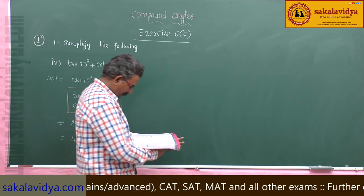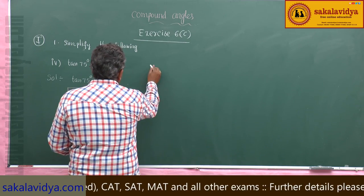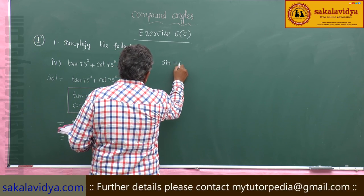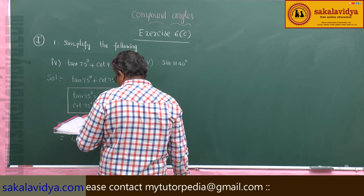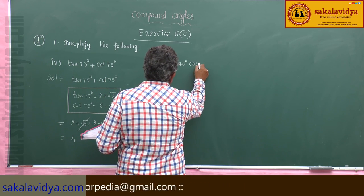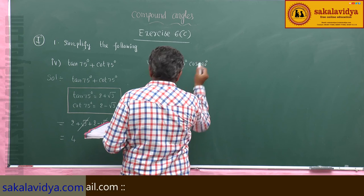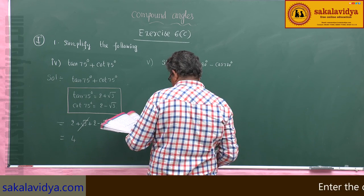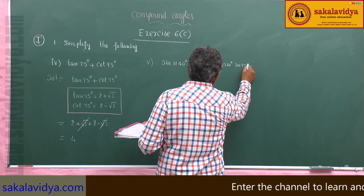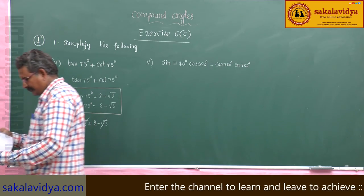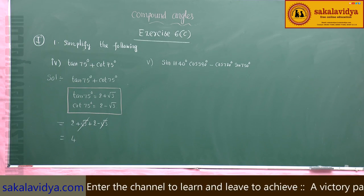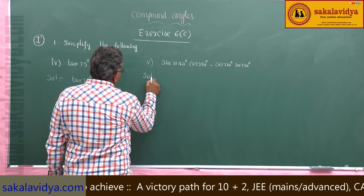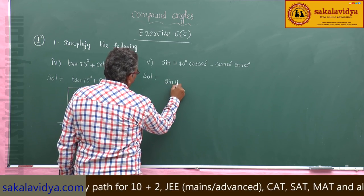Next, fifth problem: sin 1140 degrees times cos 390 degrees, minus cos 780 degrees times sin 750 degrees. For this problem, let us first find out sin 1140 degrees.